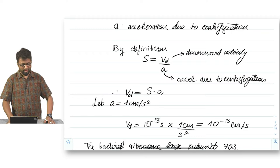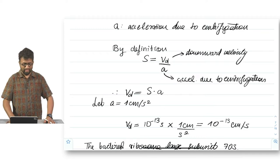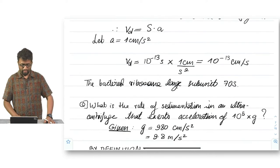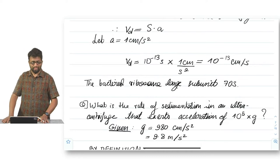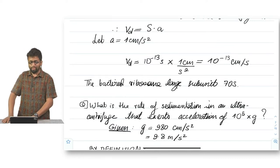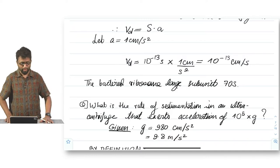And if we assume for a moment that A is equal to 1 centimeter per second square, then Vd is 10 to the power minus 13 centimeters per second. So, for an acceleration of 1 centimeter per second square, downward velocity will be 10 to the power minus 13 centimeters per second. Again, this is coming from definition of Svedberg unit.